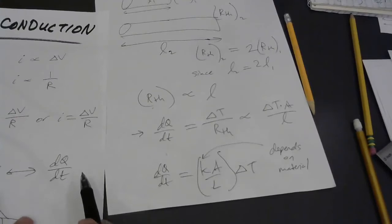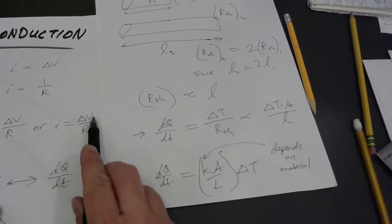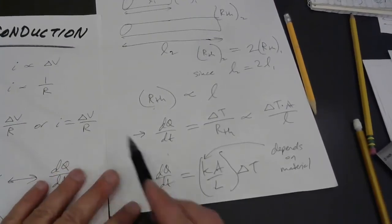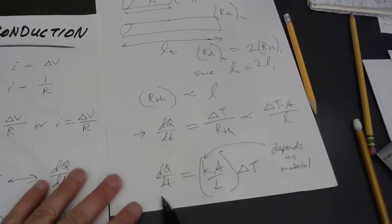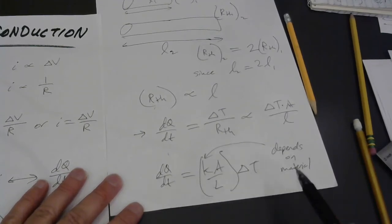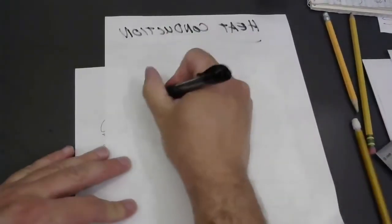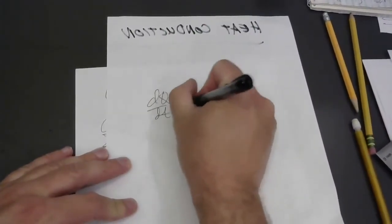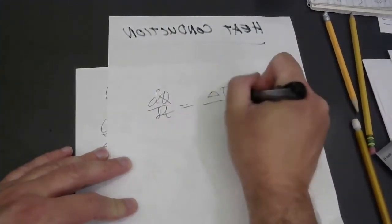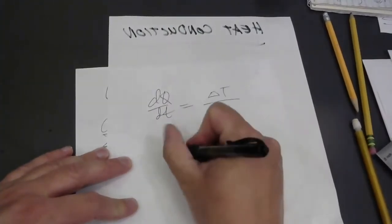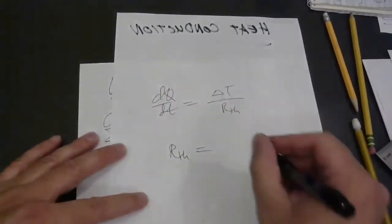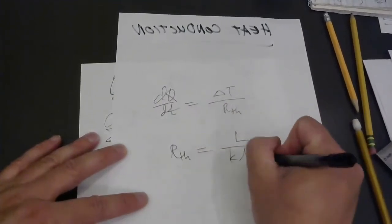if I go back, I equals delta V over I or over R, excuse me. And then this is analogous to current I, I would be equal to delta T over R. That means R thermal. Let me find another place to write this. You could say dQ dt is equal to temperature difference over thermal resistance where thermal resistance evidently is L over KA.